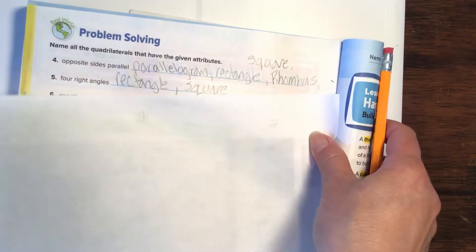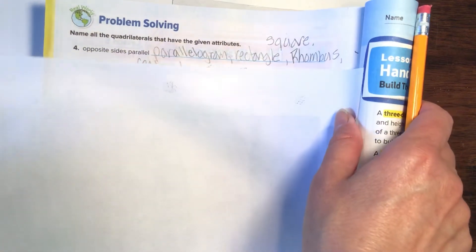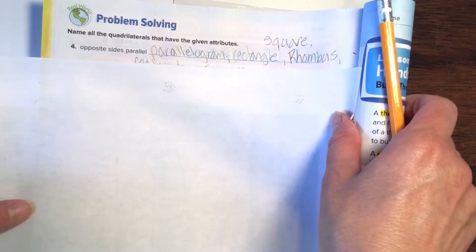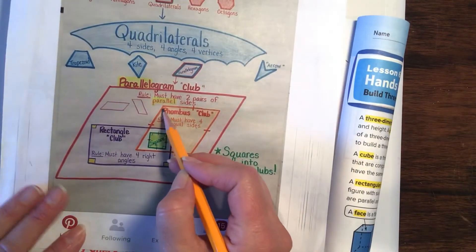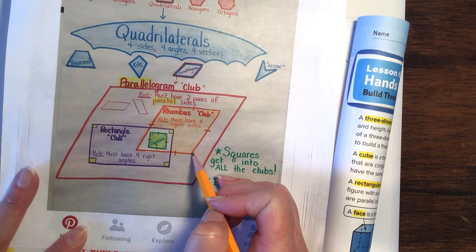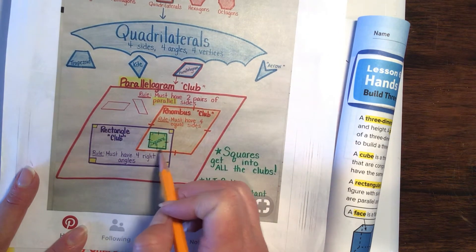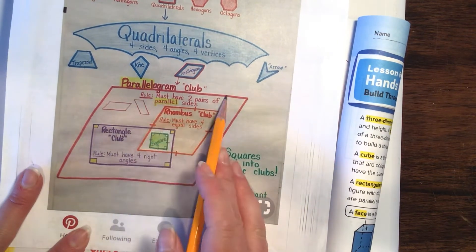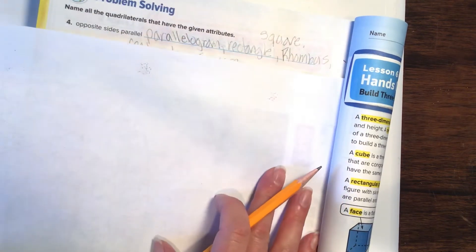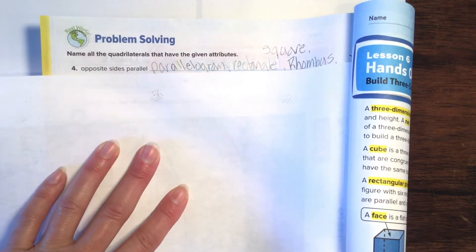We need to name the quadrilaterals and give them the attributes. We need to decide which ones have opposite sides that are parallel. Looking at our fun little paper, we can see that rhombus has opposite sides that are parallel, square has opposite sides that are parallel, and a rectangle has opposite sides that are parallel. Parallelogram, rectangle, square, and a rhombus.